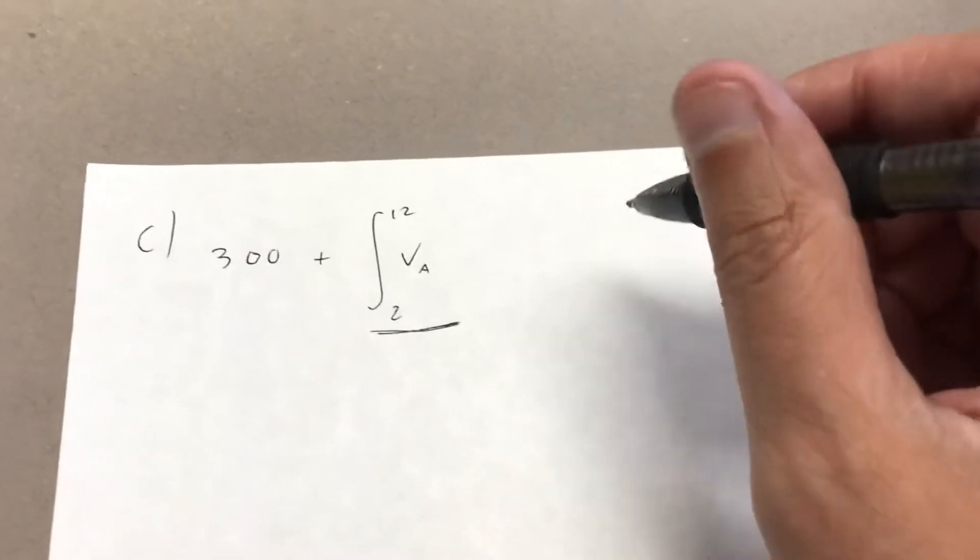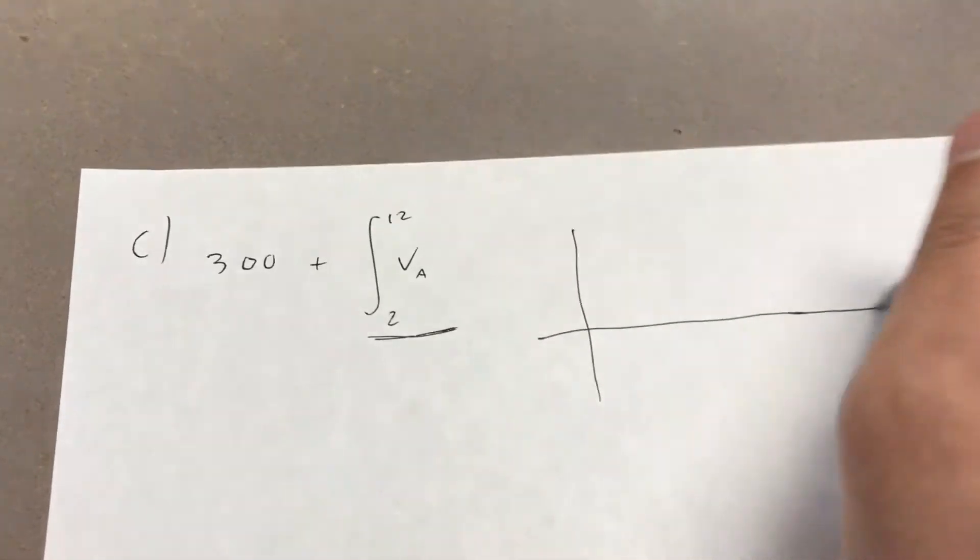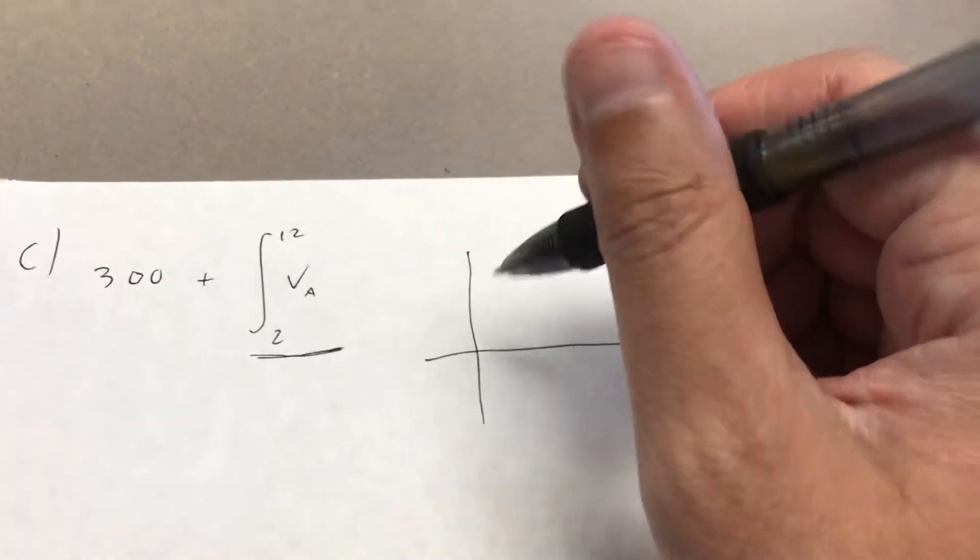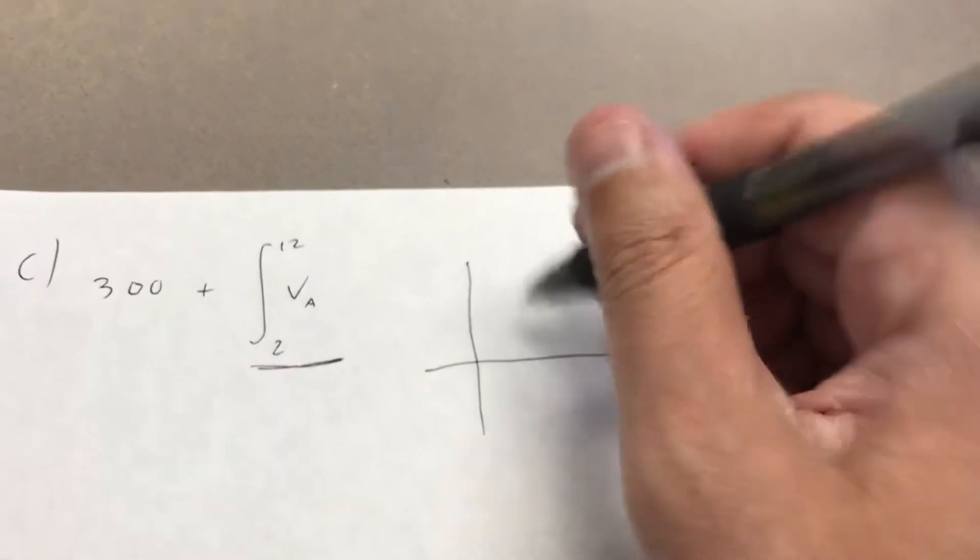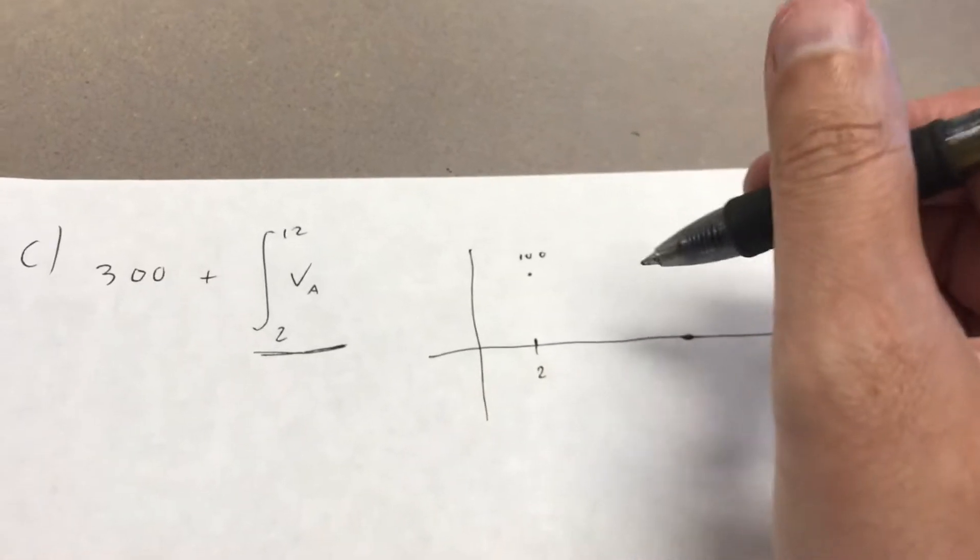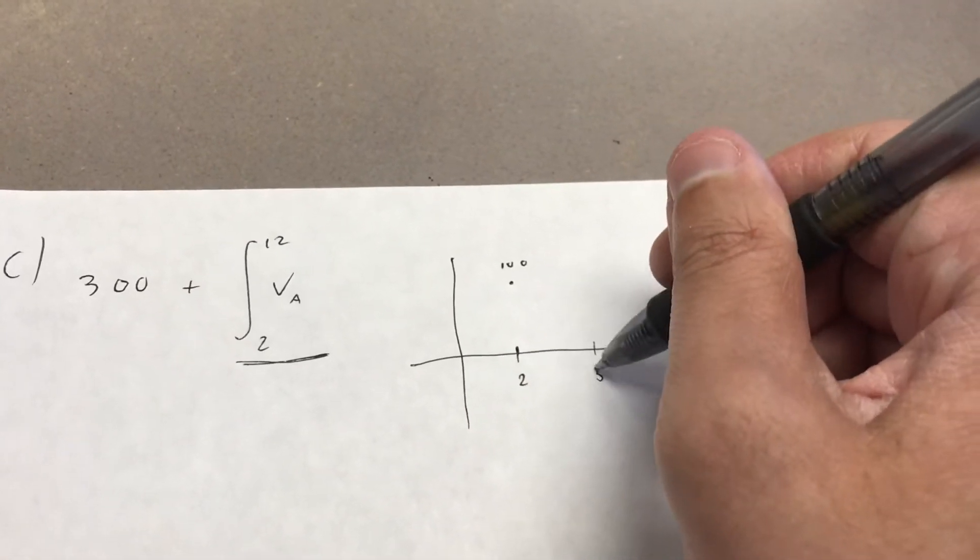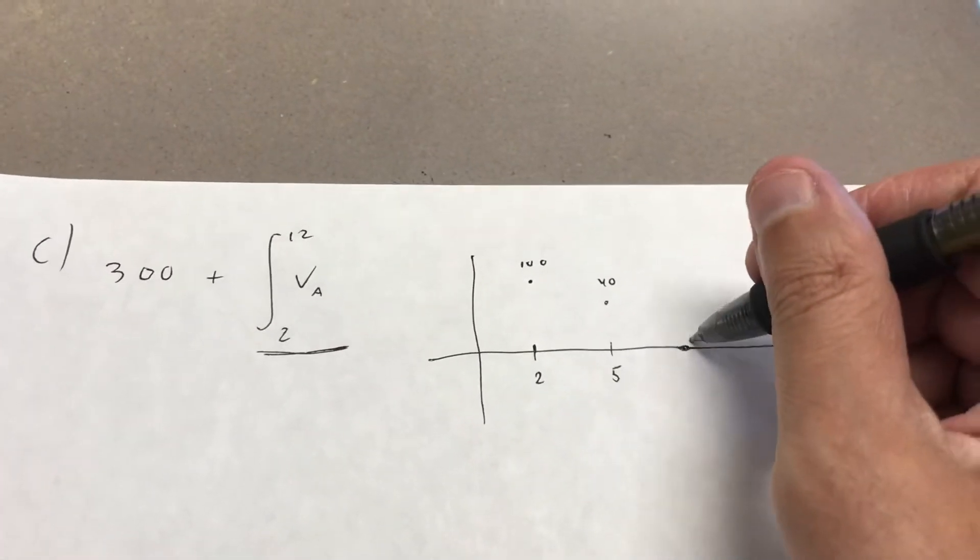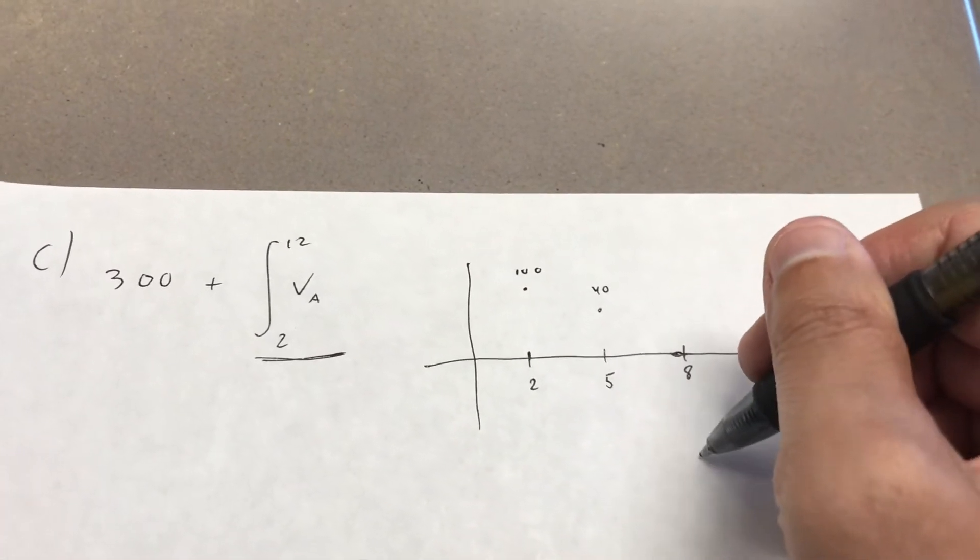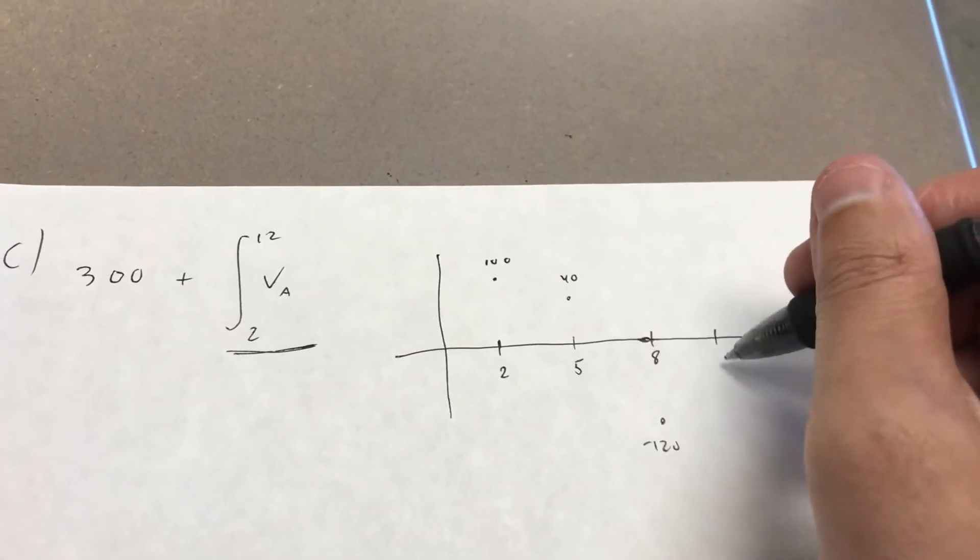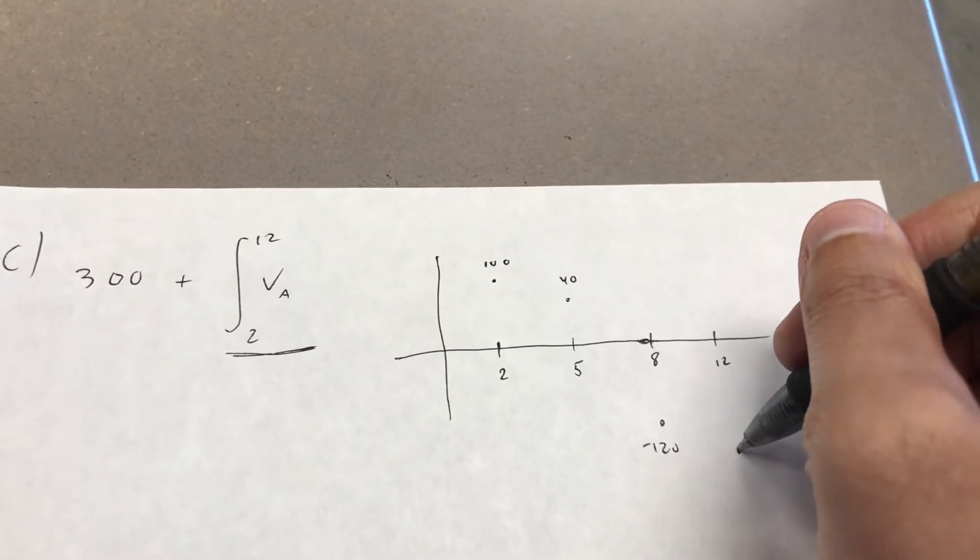In this one, they don't give you the function, so you're just going to have to estimate it using the trapezoidal rule. I've always made a big deal about plotting points, so at t=2 we have a functional value of 100, at t=5 we have 40, at t=8 we get kind of the weird thing here, we get a functional value of negative 120, and at t=12 we get negative 150.